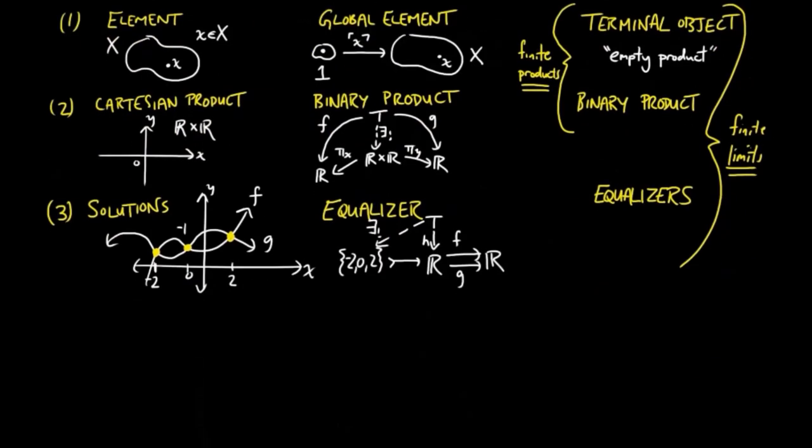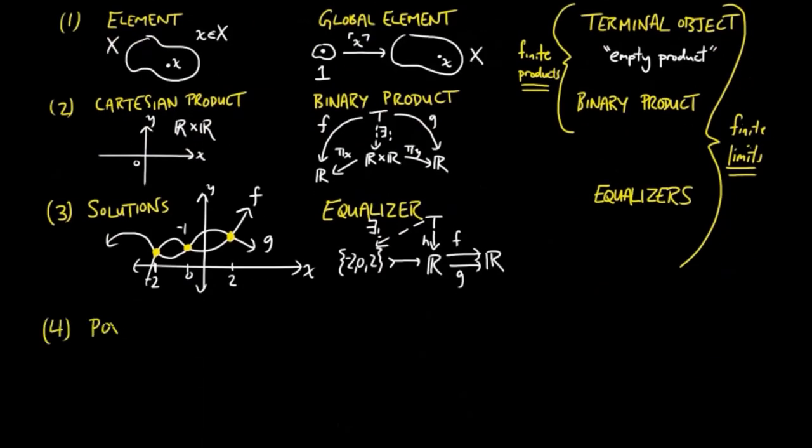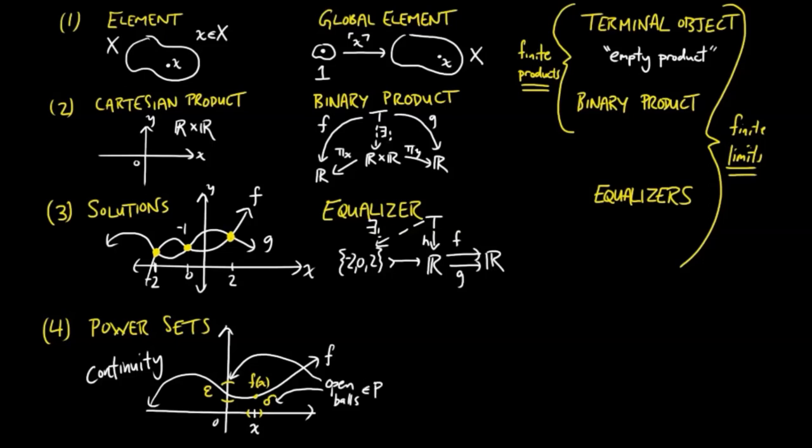In the category of sets, it is important to collectivize subsets of a set, so that we may formalize statements which quantify over subsets. For example, the description of a real continuous function f at a point x requires a quantification over open neighborhoods of x and open neighborhoods of f(x).